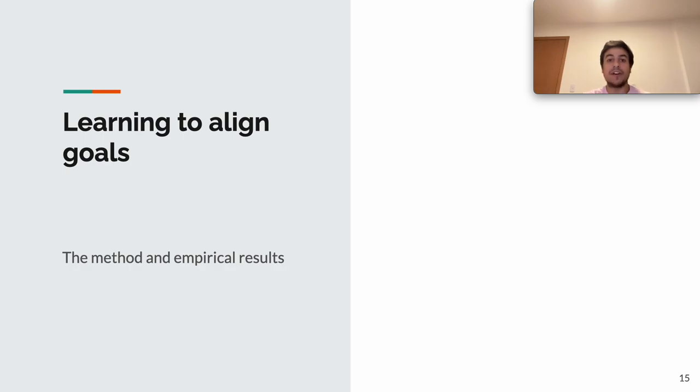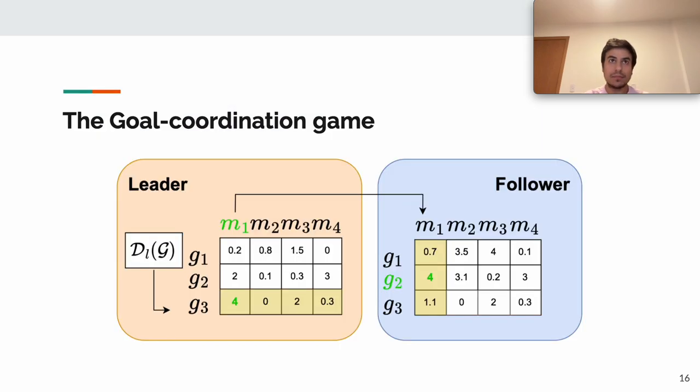After seeing that alignment plays a role in the performance, we propose a method to achieve alignment in a decentralized way: the goal coordination game. We introduce an algorithm that allows the agents to coordinate their goals without introducing centralization. This process takes place right before an episode starts. Each agent is equipped with a communication matrix. Each row of this matrix corresponds to a different goal of the agent and each column to a different message. All values of the tables are initialized with zeros.